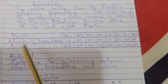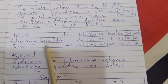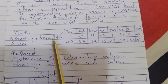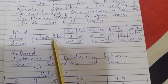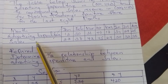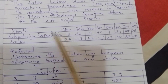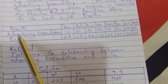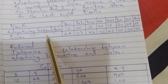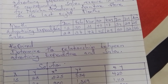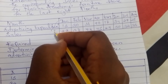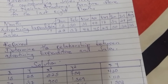You have to first identify which one is the dependent variable and which one is the independent variable. Does advertising expenditure depend on sales? Not really. But do sales depend on advertising expenditure? Yes. So the higher the advertising expenditure, the higher the sales. Sales depend on advertising, but advertising does not depend on sales. So advertising is the independent variable and sales is the dependent variable.